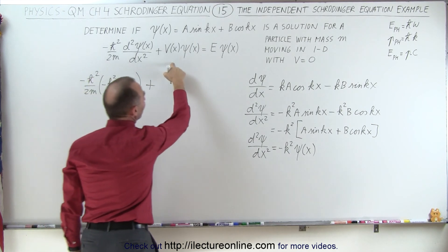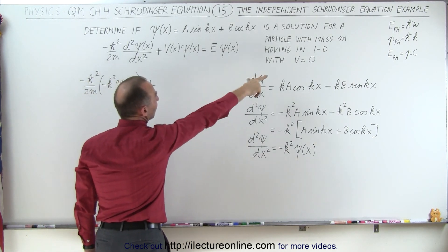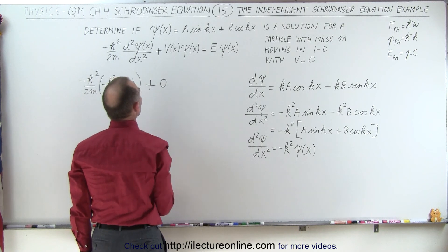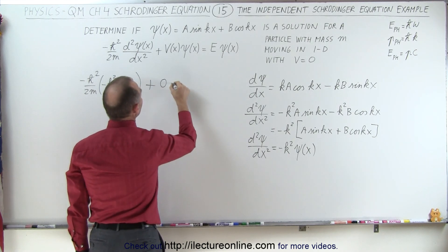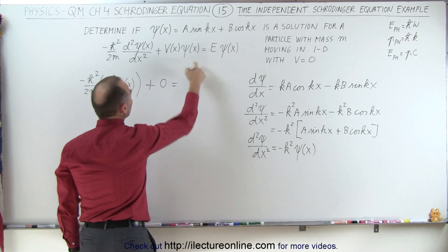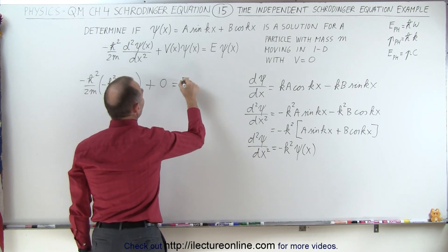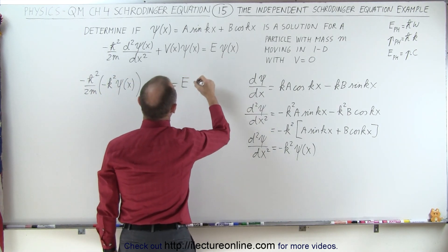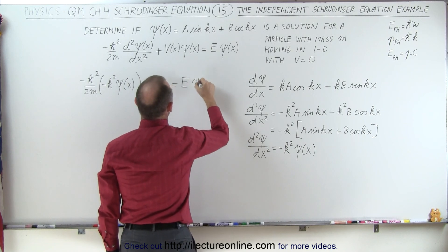The potential energy term goes to zero because we set the potential equal to zero, and that equals the energy times the wave function.